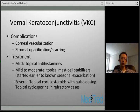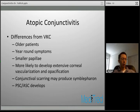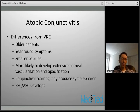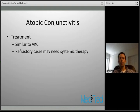Atopic conjunctivitis is another chronic papillary conjunctivitis similar to VKC, but with important differences. Patients tend to be older adults rather than children. In contrast to VKC, they have year-round symptoms rather than seasonal ones. They tend to have smaller papillae and are more likely to develop extensive corneal vascularization and opacification, conjunctival scarring producing symblepharon, and posterior and anterior subcapsular cataracts. Treatment is similar to VKC, but since this is a year-long disease you'll likely be maintaining patients on medication, and refractory cases may need systemic immunosuppression.